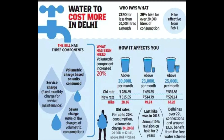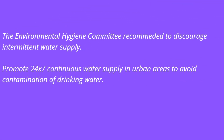However, in many developing countries like India, water tariff is not volumetric. Way back in 1949, the Environmental Hygiene Committee constituted by the Government of India recommended to discourage intermittent water supply and promote 24x7 continuous water supply systems in urban areas, with the objective to prevent contamination of drinking water in piped water distribution systems.